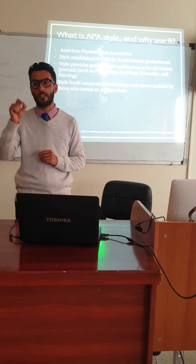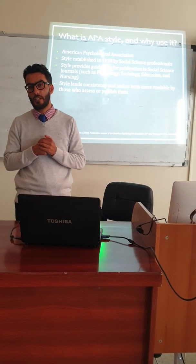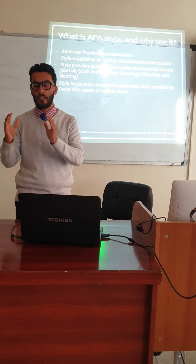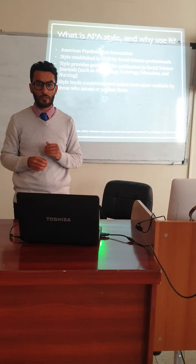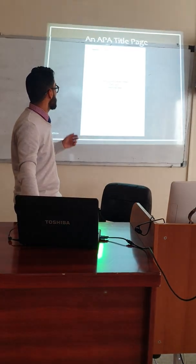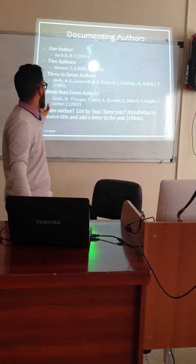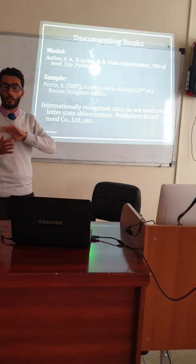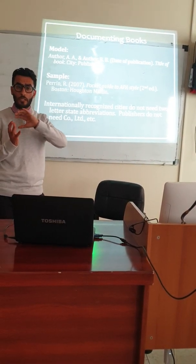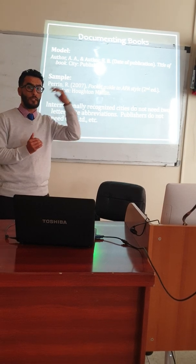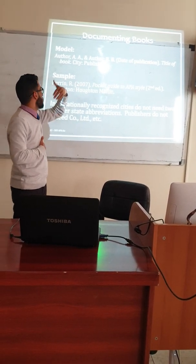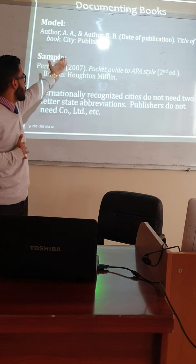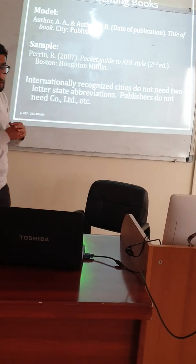We have to mention the author and the publication date inside the text. We discussed more significantly the reference list. We have to start with the surname of the publisher, then a comma with a capital letter. I will show you how we reference — this is how we cite in our text and how we document. This is how to reference a book in our reference list: the author, date of publication, title of the book, the city and place where the book was published, and the publisher.